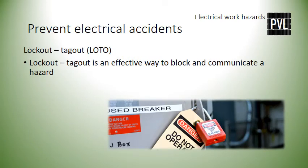Lockout/Tagout, sometimes called LOTO, is an effective way to block and, at the same time, communicate hazards. During lockout, a padlock or similar locking device is placed on a power source, switch, or circuit breaker before working on that piece of equipment. This is done to prevent someone from energizing the equipment. Your name, photograph, worker identification number, and telephone number are often required to be placed on the label that goes on the lockout device.